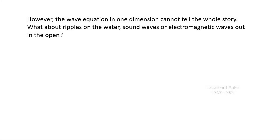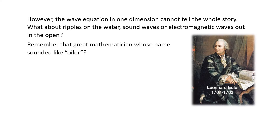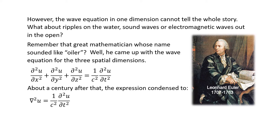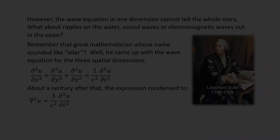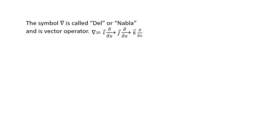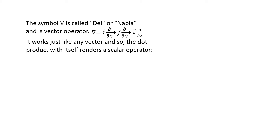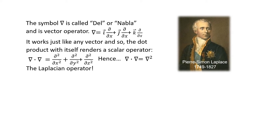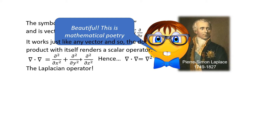The one-dimensional wave equation cannot tell the whole story. What about ripples in water, sound waves, or electromagnetic waves in the open? A great mathematician — Euler — came up with a wave equation for three dimensions. The expression condensed to the form with the Laplacian. The symbol that looks like an inverted delta is called del or nabla, a vector operator. Its dot product with itself renders a scalar operator — del-squared, the Laplacian operator.